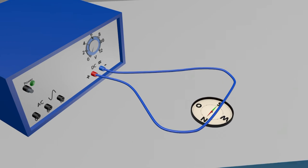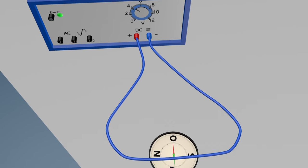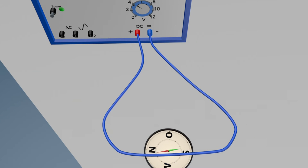Also here, it is shown that the compass needle aligns itself perpendicularly to the power cable as soon as current flows through the power cable.